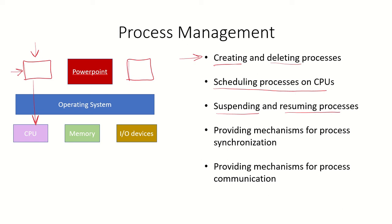The OS also provides mechanisms for process synchronization. Suppose there is a resource and two processes want to use the same resource — it could be an input/output device or common data sections. The OS provides a mechanism to synchronize how those processes access that resource. If two processes want to communicate with each other, the OS also provides mechanisms for inter-process communication.